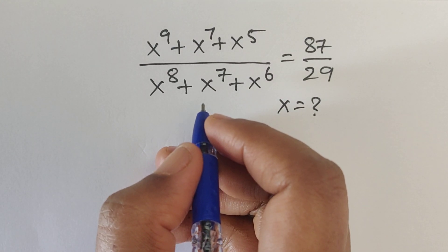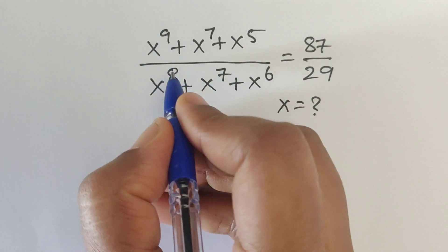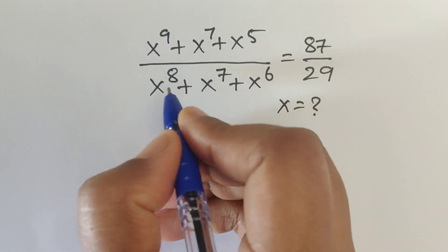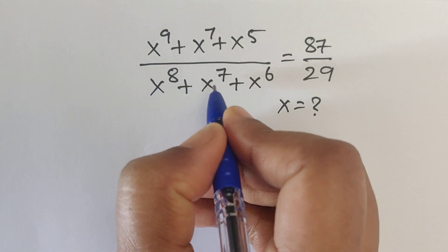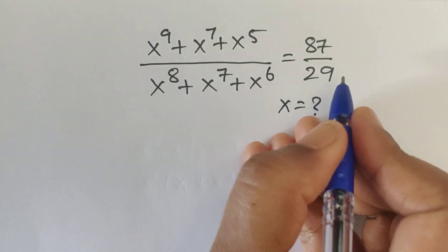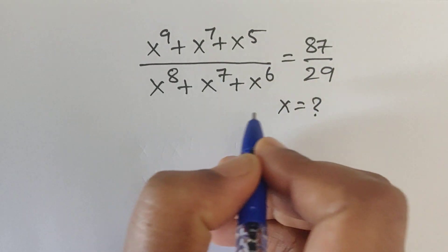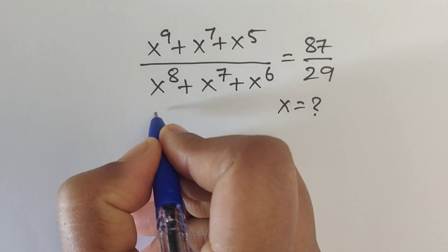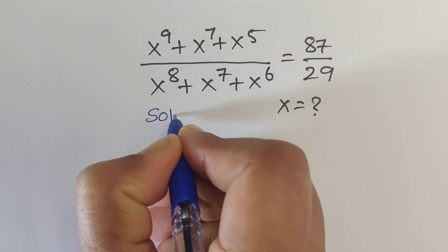Hello everyone, welcome back to our channel. Here we have one problem: x power 9 plus x power 7 plus x power 5, divided by x power 8 plus x power 7 plus x power 6, equal to 87 divided by 29. In this problem we have to find the value of x. So how do we solve this problem? Let's see the solution.